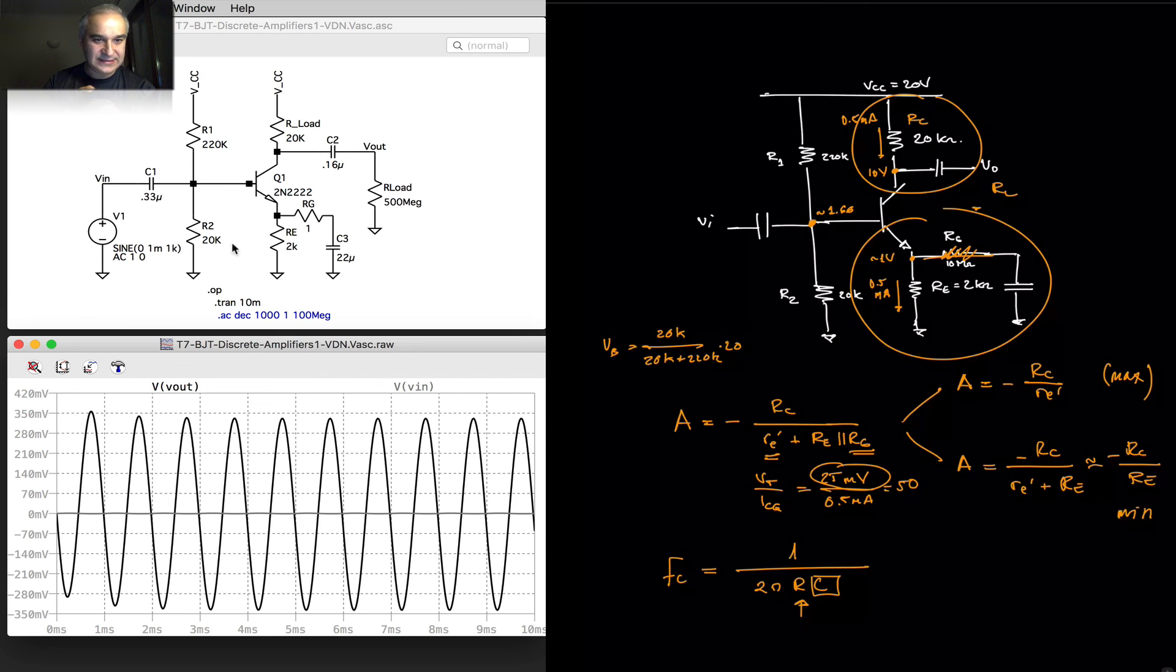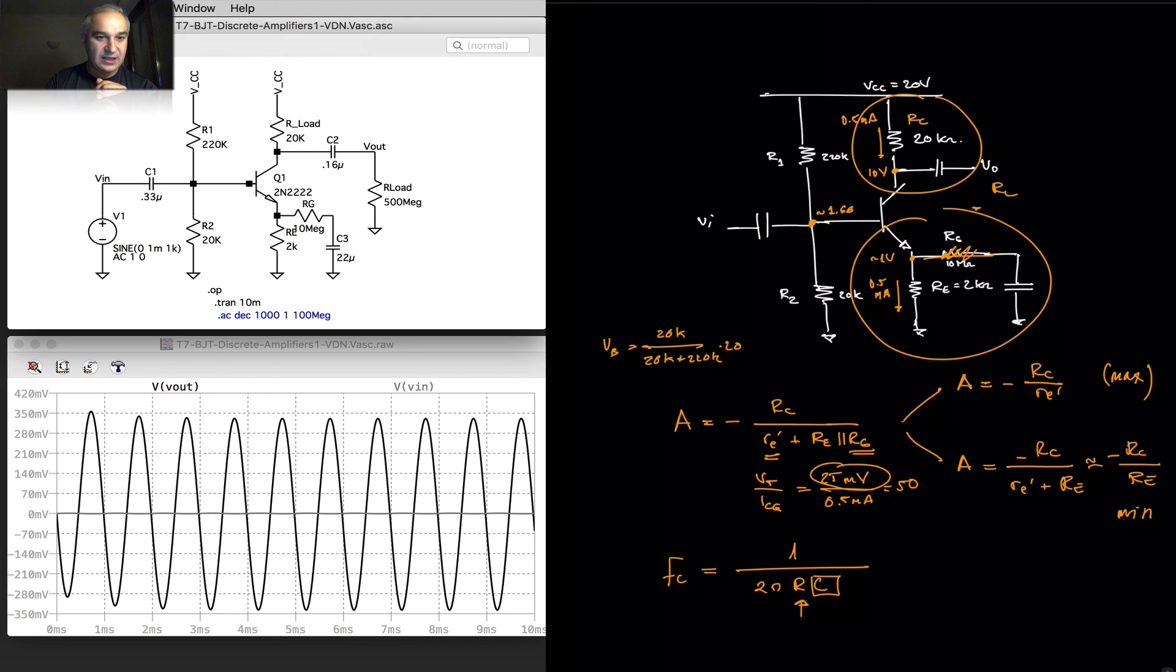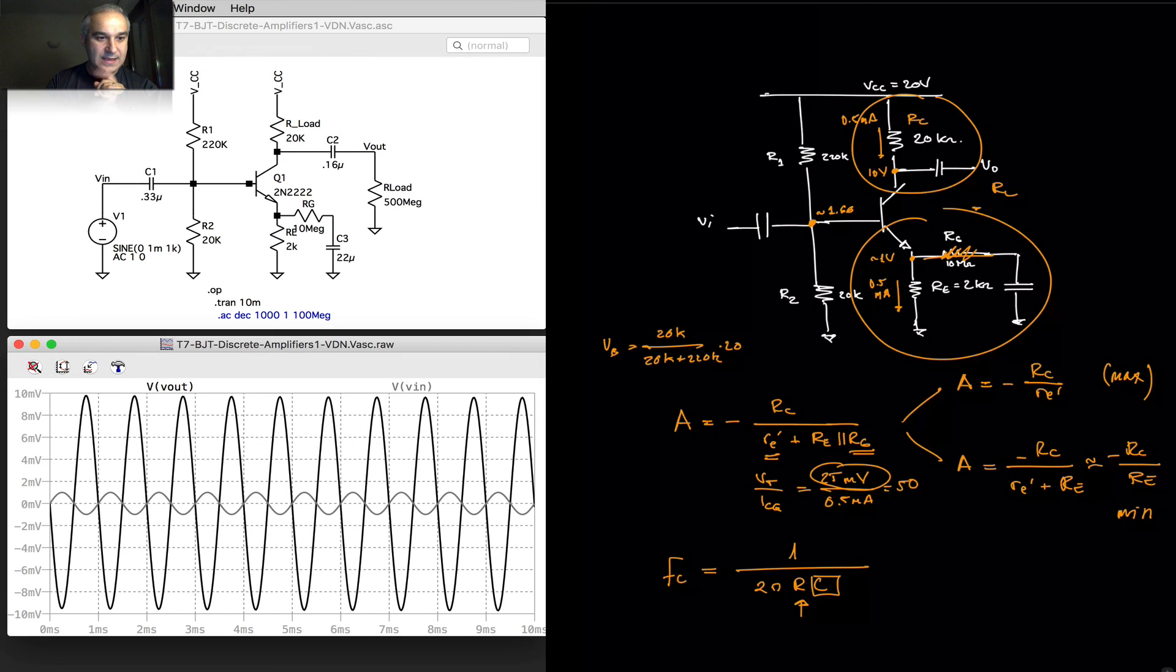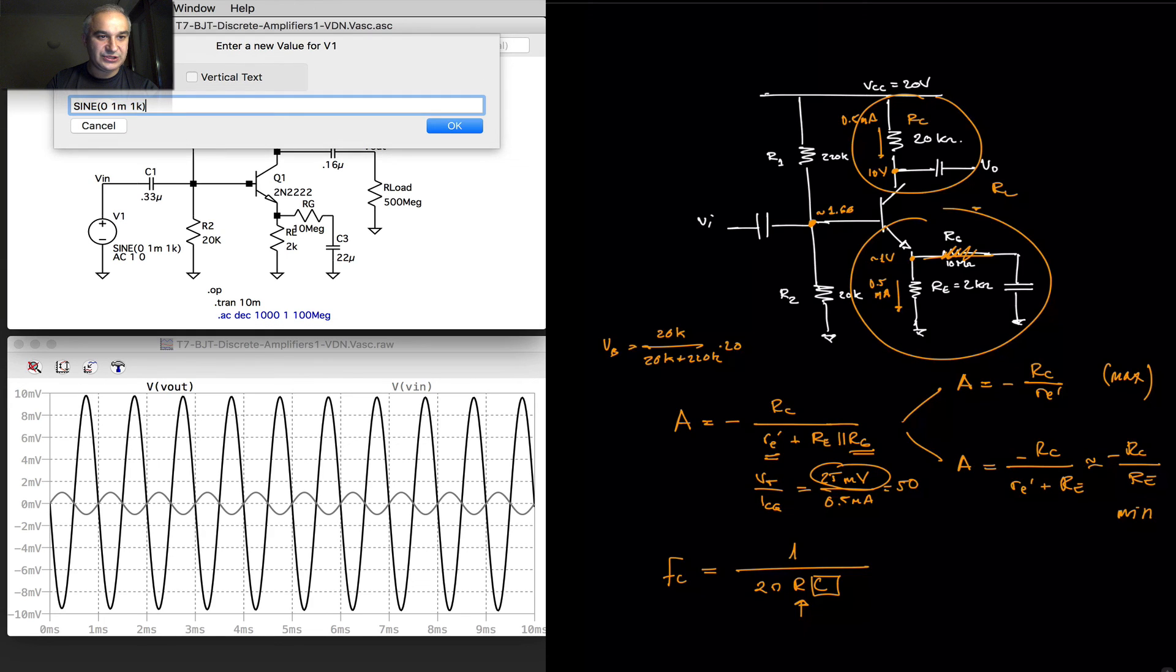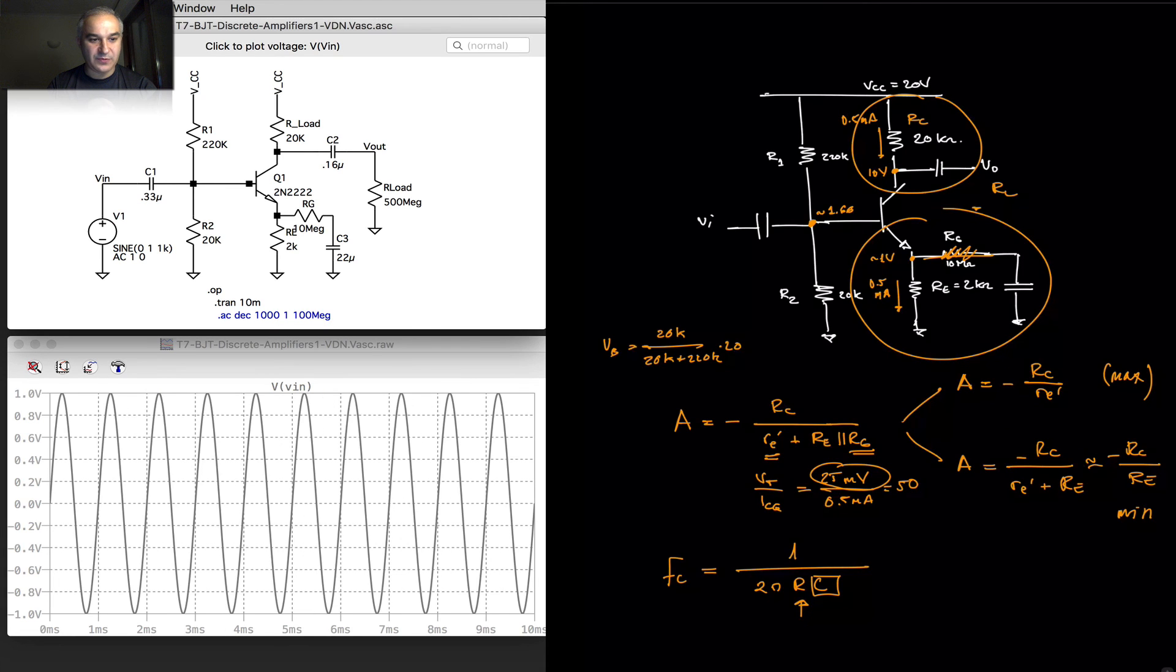Let's see what happens for more normal gains. So, 10 meg, gain of 10, at higher voltages. Let's do one volt. Now, at one volt, we're going to have a problem, and it's that we are going to saturate. Why is it that we are saturating, we are clipping? It is because, notice, so we have our input here.